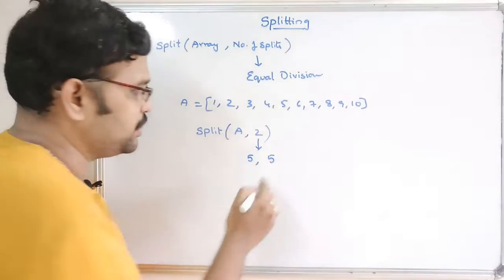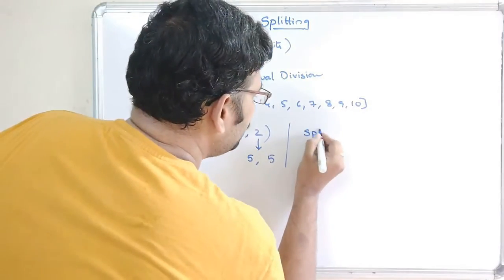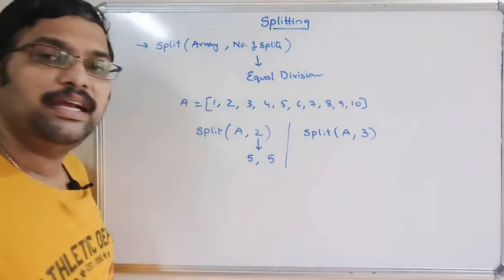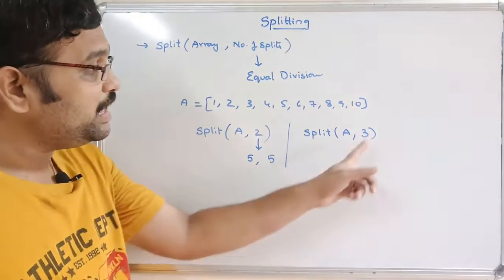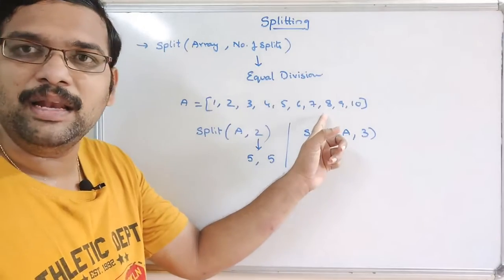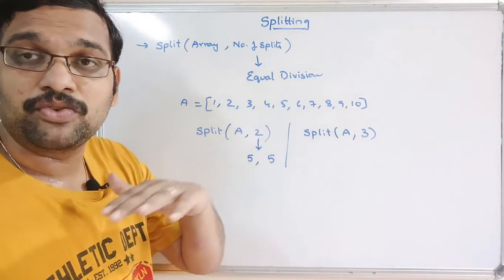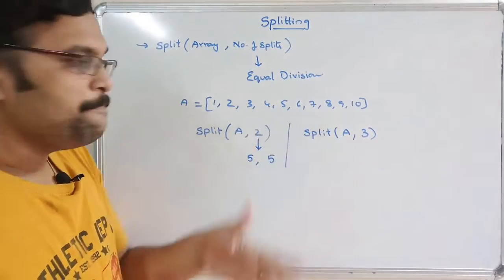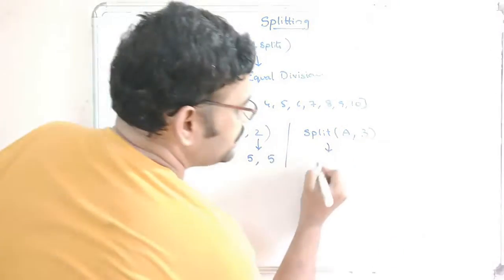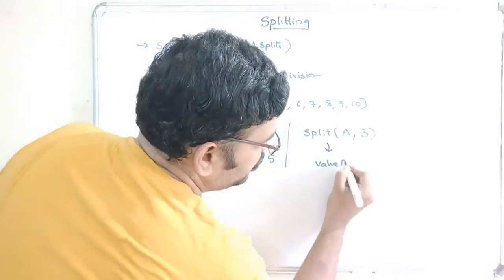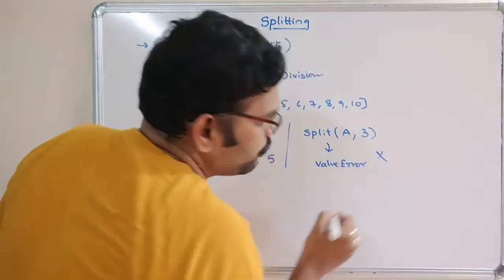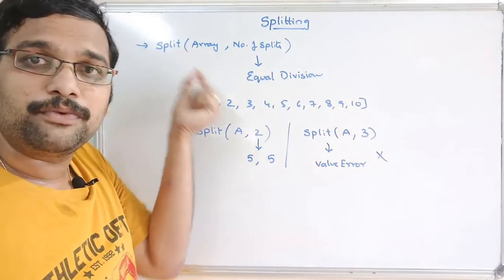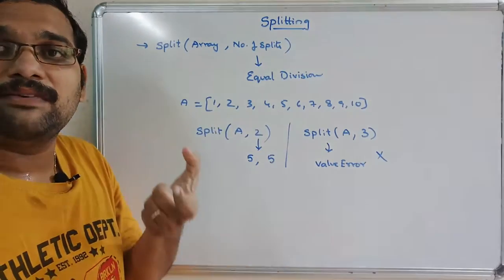If you want to split into three divisions, it is not possible to have three equal divisions for 10 elements. There is no possibility of equally dividing 10 elements into three, so this will raise an error. The split function is only possible for equal division of elements.